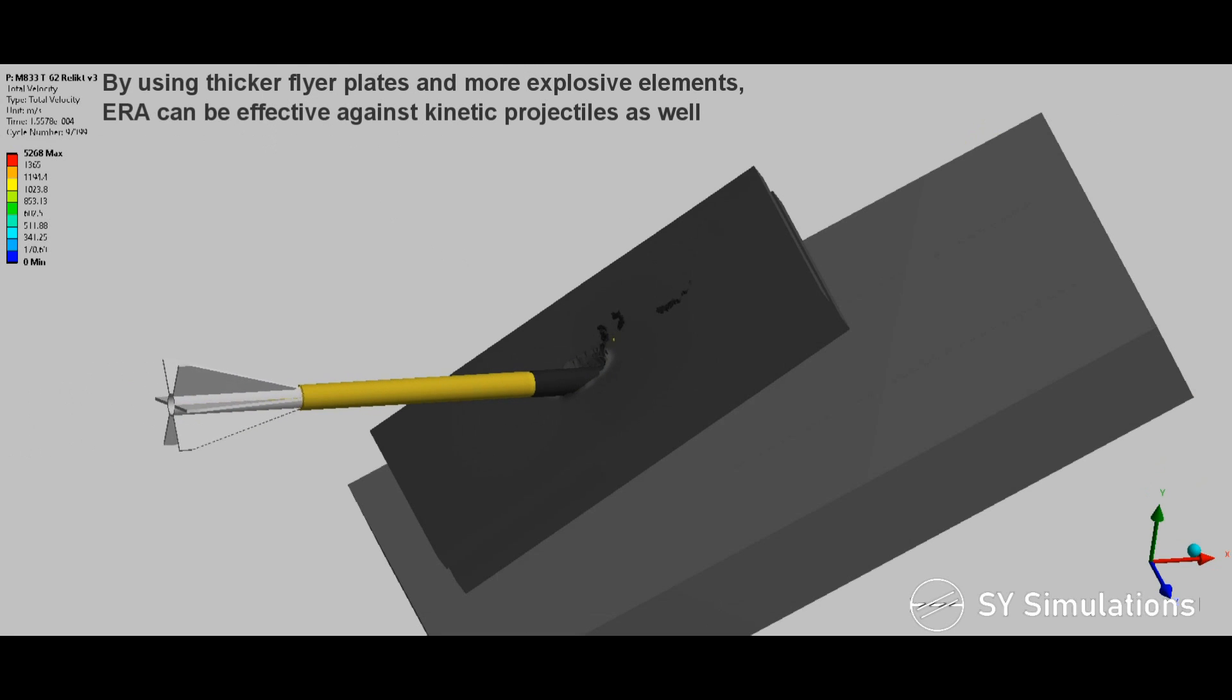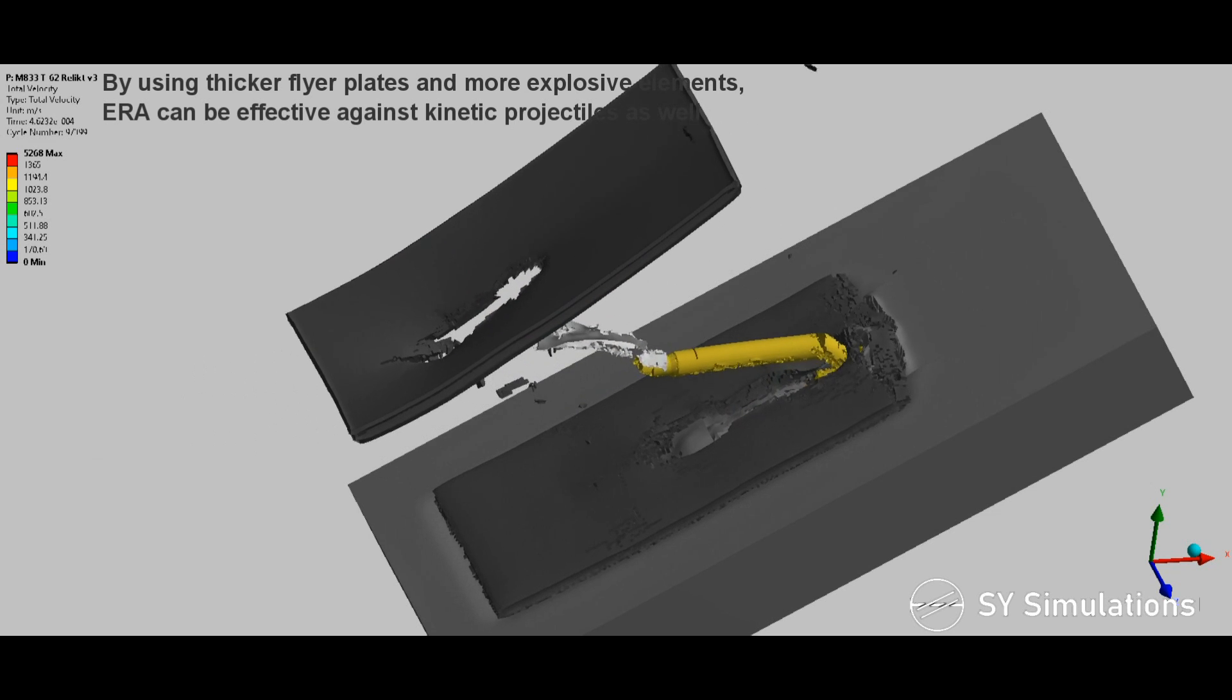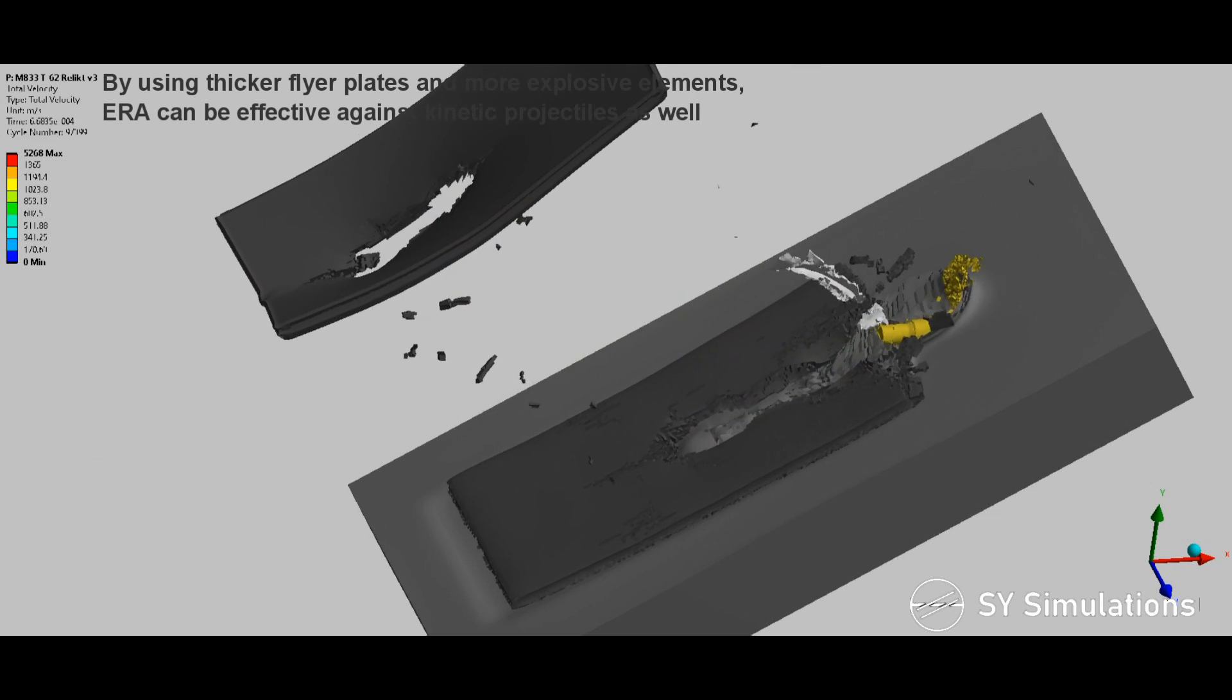By using thicker flyer plates and more explosive elements, explosive reactive armor can be effective against kinetic projectiles as well.